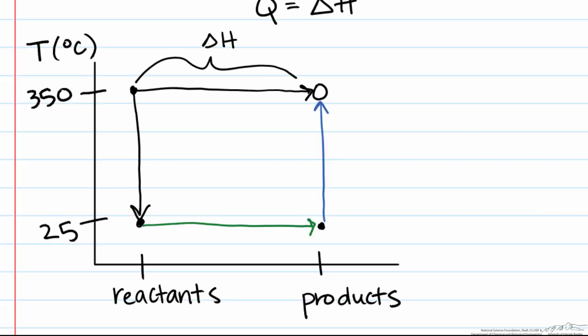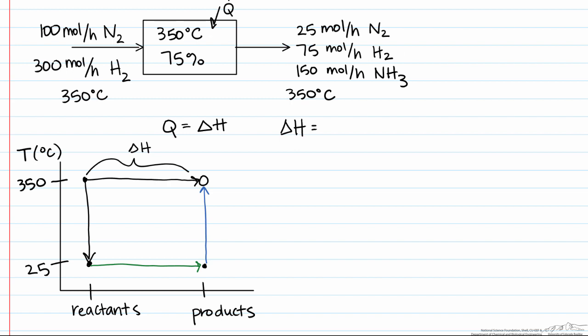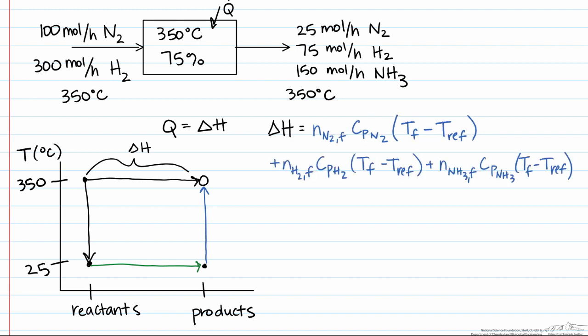We'll color-code the enthalpy contributions. The last leg — shown in blue — is heating up the products from 25°C to 350°C. This equals the moles of nitrogen in the product stream times its heat capacity times (T_final − T_ref), with similar terms for hydrogen and ammonia. We're heating 25 moles of nitrogen, 75 moles of hydrogen, and 150 moles of ammonia from 25°C to 350°C, using constant heat capacity values for these ideal gases as given in the problem statement.